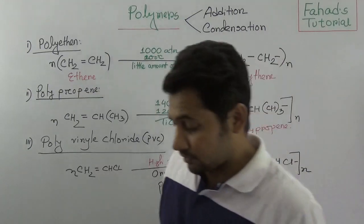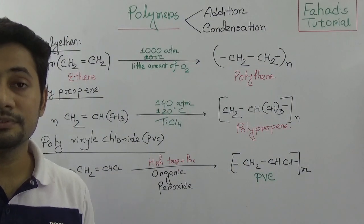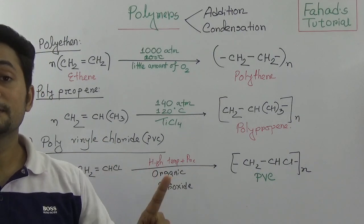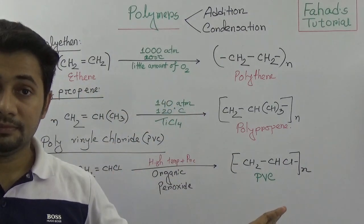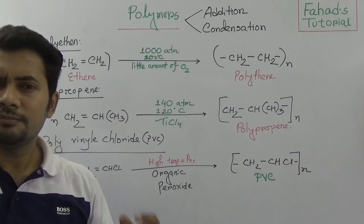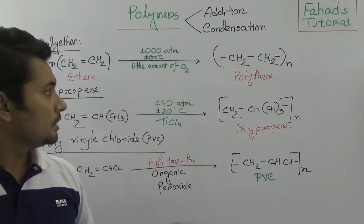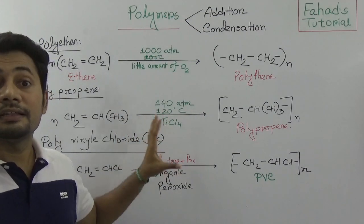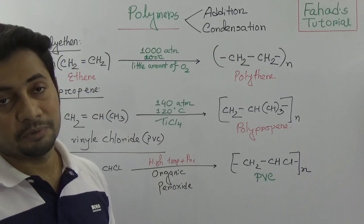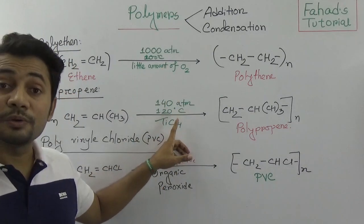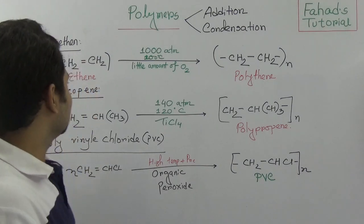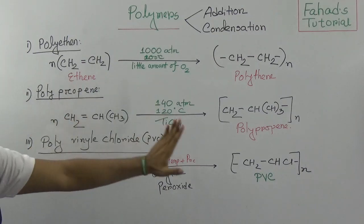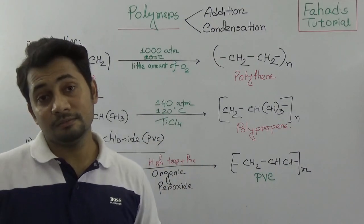Those watching this tutorial, please remember that polymer reactions are based on two types according to structure, because in addition polymers the monomers add directly. The catalyst and the conditions of temperature and pressure are very important — please do not miss these when answering in your question paper. To recap: polythene from ethene, polypropene from propene, and polyvinyl chloride from vinyl chloride.